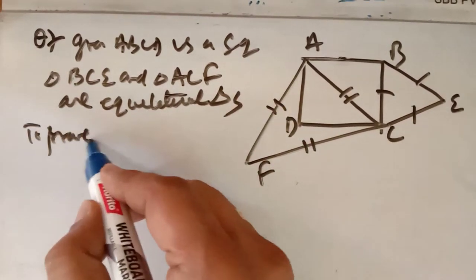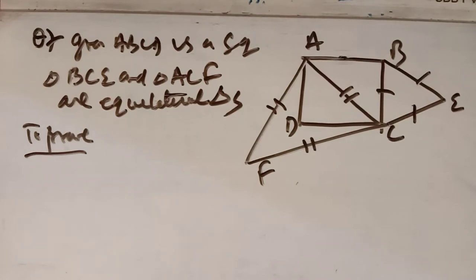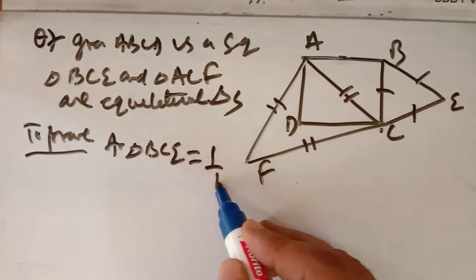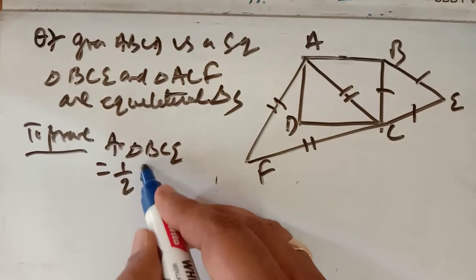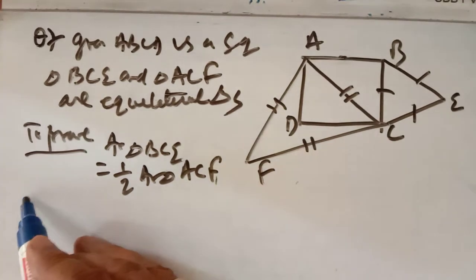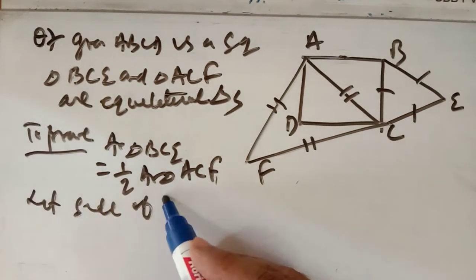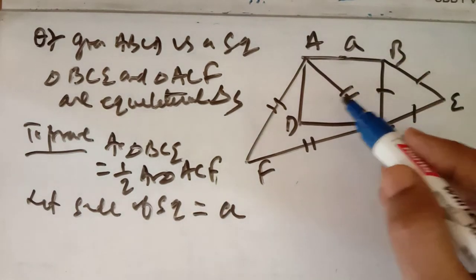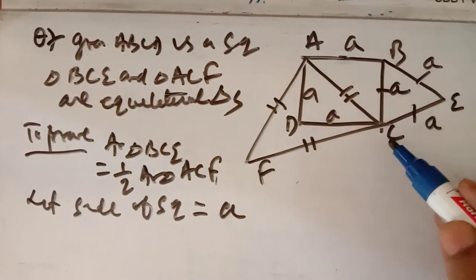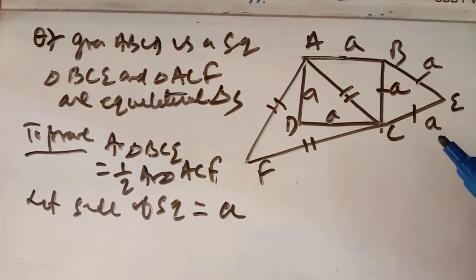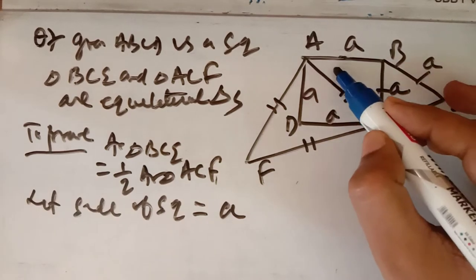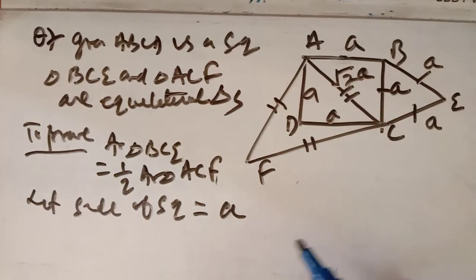Given: ABCD is a square and triangles BCE and ACF are equilateral triangles. You have to prove that the area of the equilateral triangle described on the side is equal to half the area of the triangle described on the diagonal. Let the side of the square equal A.